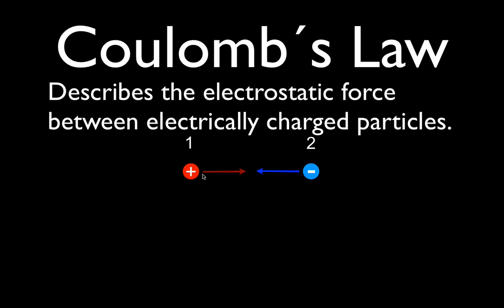The electric force is a force, and a force is a vector, so we show that graphically with an arrow that has direction and magnitude. This arrow represents the force that particle one feels from particle two, and the other arrow represents the force that particle two feels from particle one. We designate these as F1,2 — the force on particle 1 from particle 2 — and F2,1 — the force on particle 2 from particle 1.